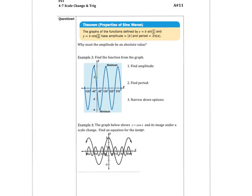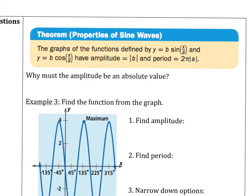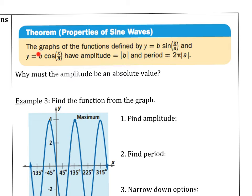This brings us to the theorem: the property of a sine wave is also a property of a cosine wave, just shifted 90 degrees. The graphs of y = b·sin(x/a) and y = b·cos(x/a) both have an amplitude of |b| — the vertical stretch — and a period of 2π|a|. Note that a is the number dividing x, so for cosine of 2x, the period would be 2π times 1/2.